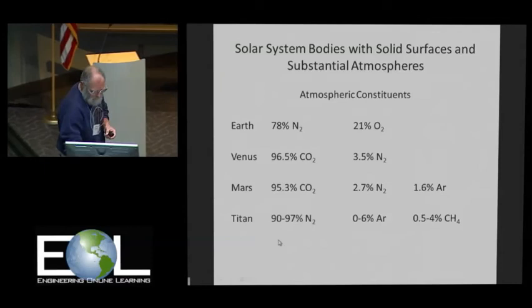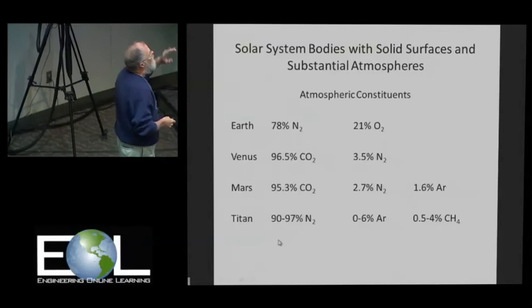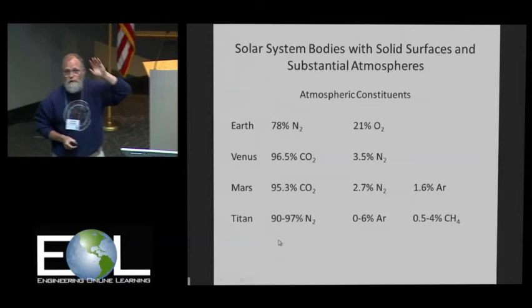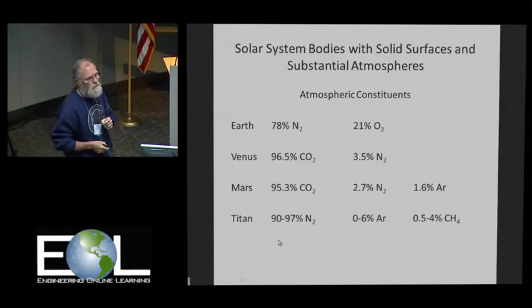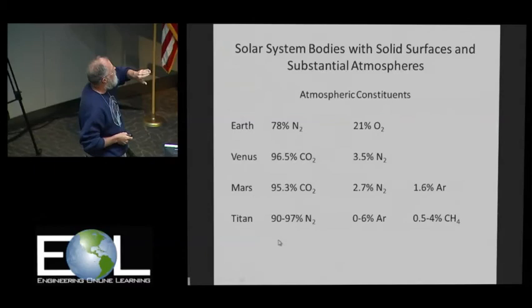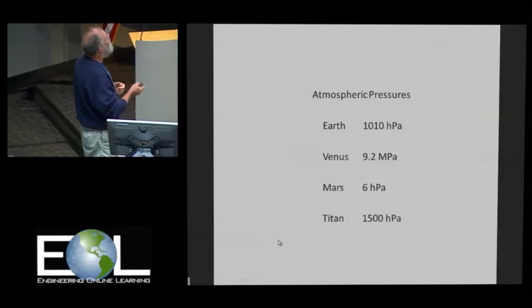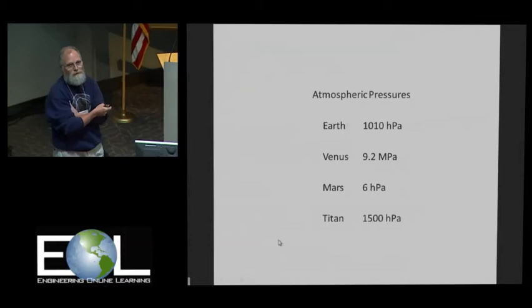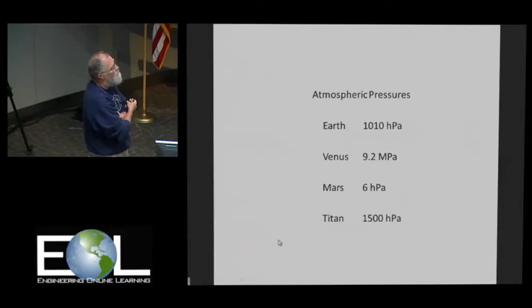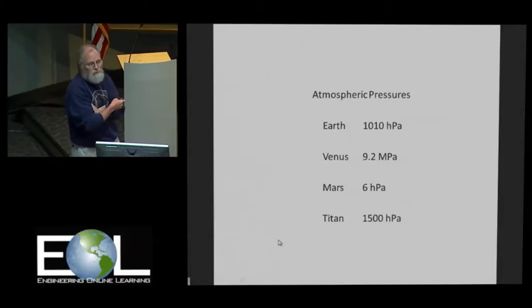Now we'll go to a little planetary astronomy. There are about four known bodies in the solar system that have nice solid surfaces and substantial atmospheres: the Earth, Venus, Mars, and Titan. These are the major constituents of those atmospheres. The Earth's atmosphere is mainly nitrogen, some oxygen. Venus and Mars are mainly carbon dioxide, with small amounts of nitrogen. And then Titan, as we've found out in the last five or ten years, is about 90 to 97 percent nitrogen, some argon, and then methane, CH4. If you look at atmospheric pressures at the surface, the Earth is about a thousand hectopascals. Venus, 9.2 megapascals. Mars, down to about six hectopascals. And Titan is very close to the Earth, about 1,500 hectopascals.